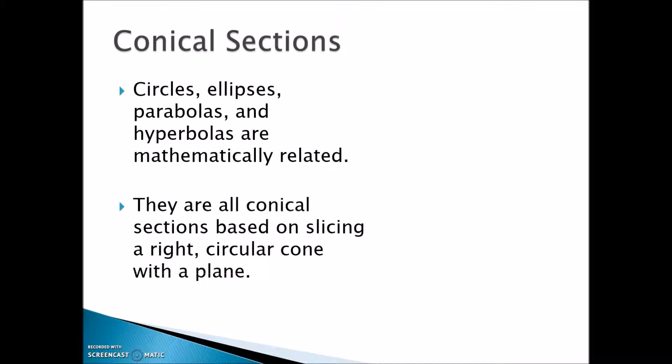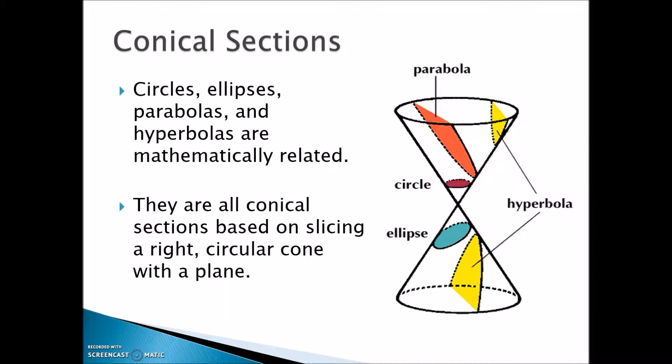Circles, ellipses, parabolas, and hyperbolas are all mathematically related because they're referred to as conic sections. If you take a plane and slice a cone at various angles, you're going to get one of these four shapes. A straight horizontal cut, perfectly parallel to the base, gives us a circle. If we angle the plane a little bit and cut through like that, we have an ellipse. A bigger angle is a parabola, and if it's basically straight up and down, that gives us a hyperbola. These four shapes have similar mathematical equations.